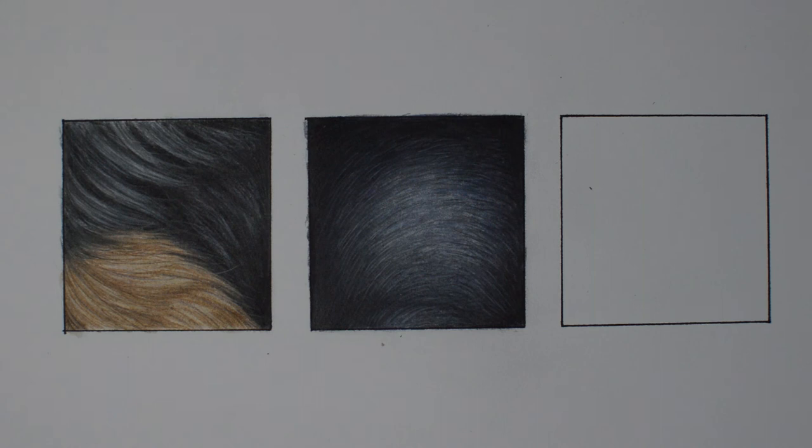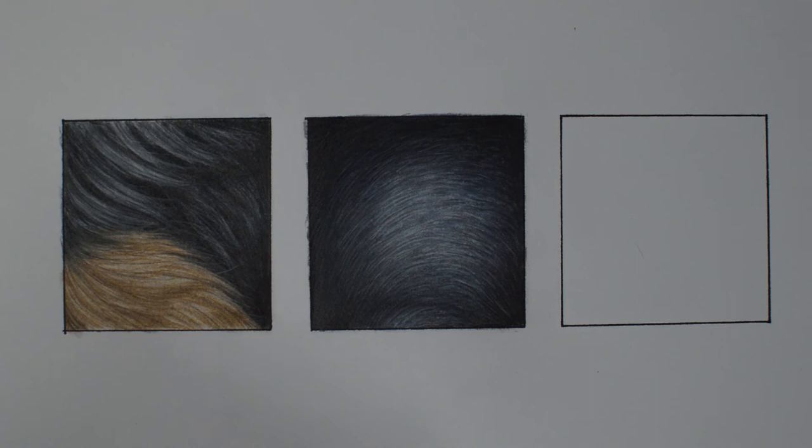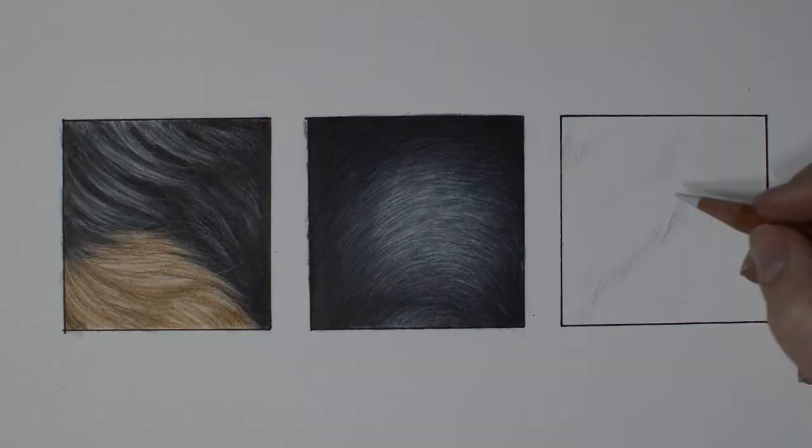When you're drawing white fur try not to think of it as white. Much like black fur it's going to suck up the colors of its surrounding and that's going to be implemented in the shadows and highlights. So what I do when I draw white fur is I use my color dropper tool and I take a close look at the reference to really see what colors are in the fur.